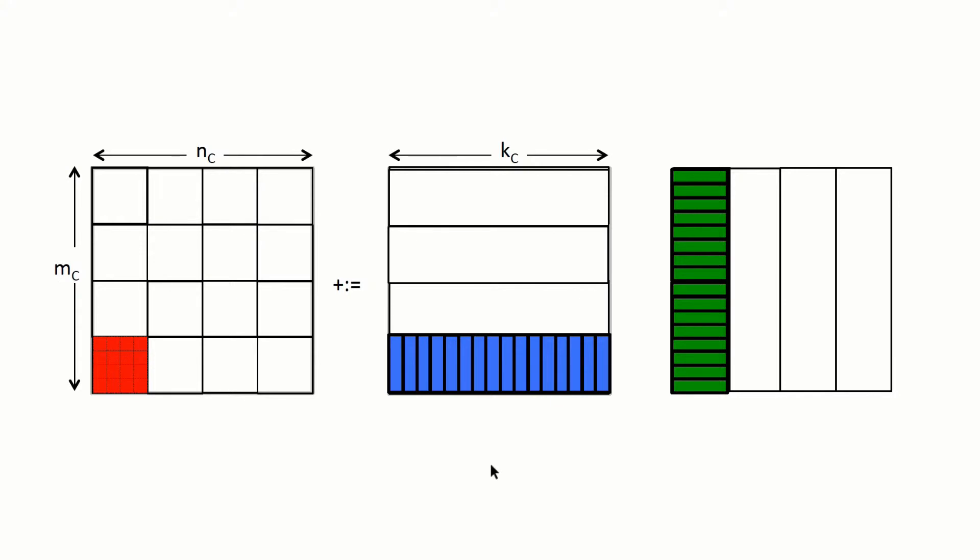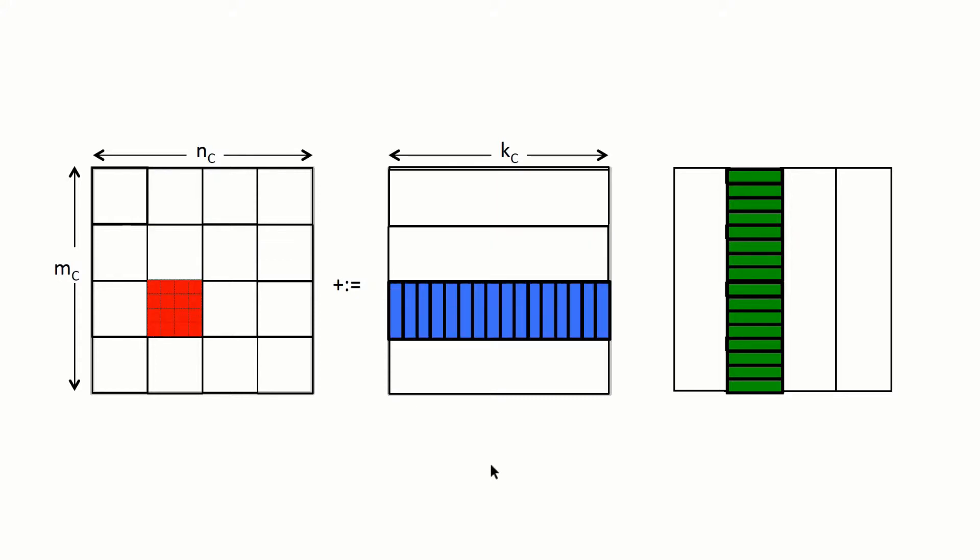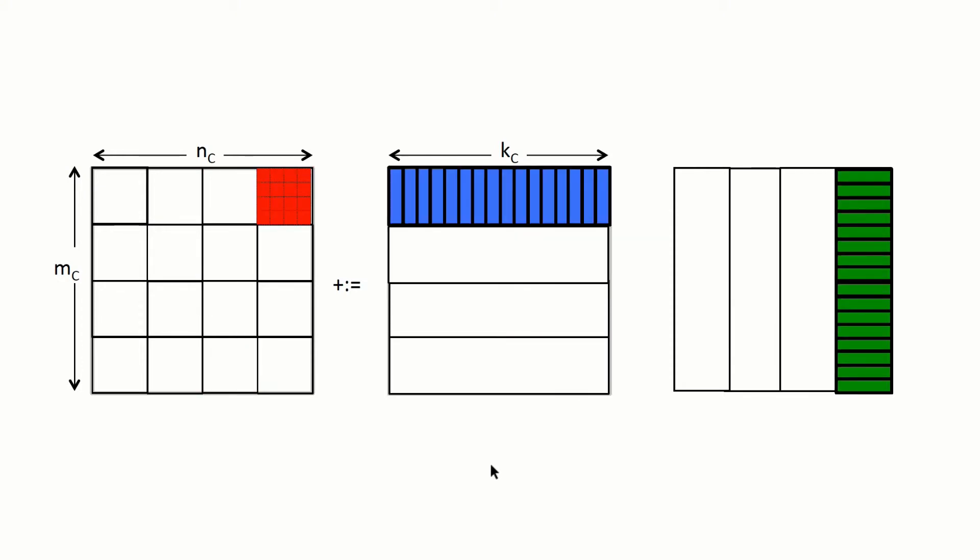Okay, then we move on to the next column of micro tiles, and that means that we're starting to use the next micro panel of B. But we reuse the same micro panels of A again.